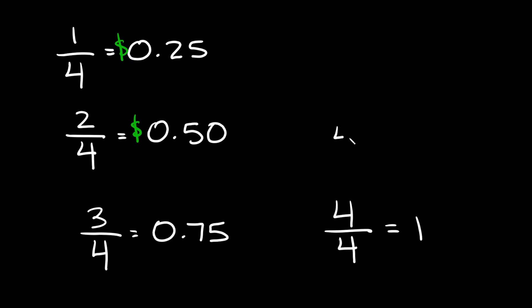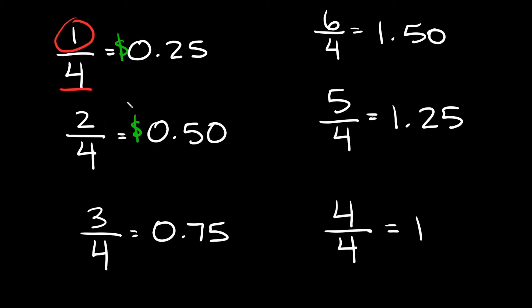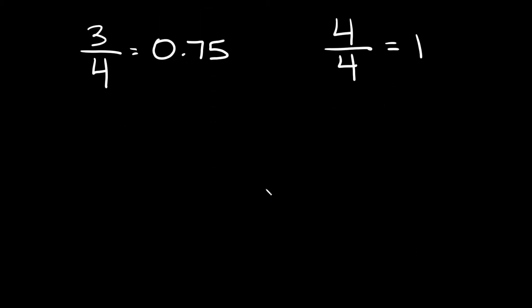If I had five quarters, my answer would be one dollar and twenty-five cents. Six quarters would be one dollar and fifty cents, or 1.50. So the trick here is: whenever you have a four in the denominator, just think of the top number as how many quarters you have. You can apply this same thought process to a couple of other numbers.